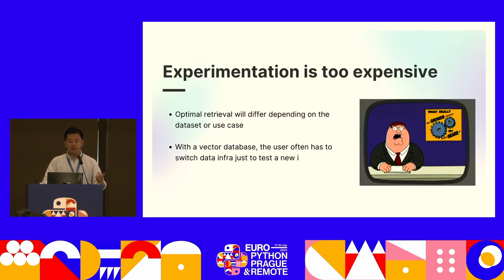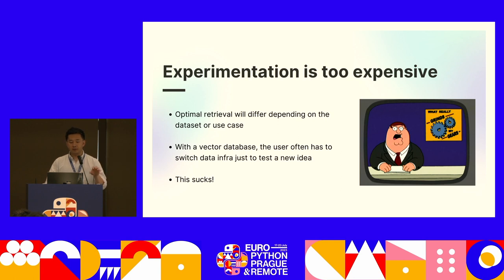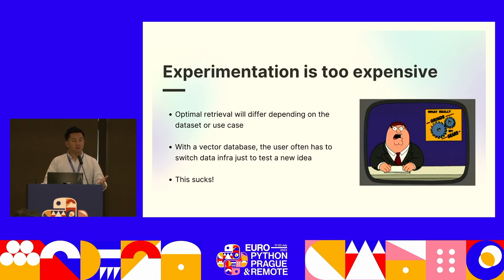All of these characteristics will cause lots of pain points for the end user — the new category of AI engineers. Number one is that experimentation is too expensive. From dataset to dataset, from use case to use case, serious practitioners trying to build production-quality apps find that the optimal retrieval method will differ. Some might need vector search, others keyword search, and yet others a combination of these two. With vector databases, users often have to switch data infrastructure just to test a new idea — the opposite of what you want. If you have to do all the data engineering work to move data from one database to another, iteration becomes really slow.